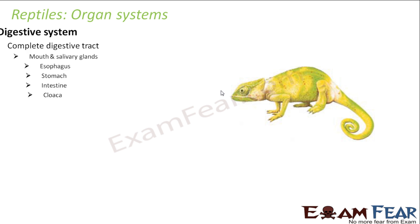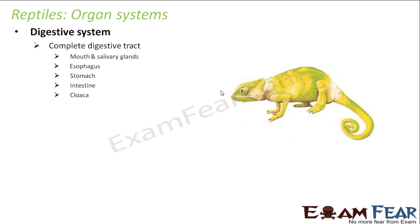Let us talk about the organ systems of reptiles. They have a complete digestive tract with all the different organs present in place, like mouth, salivary glands, oesophagus, stomach, intestine, and cloaca. Cloaca is used for excretion or ejection purposes.